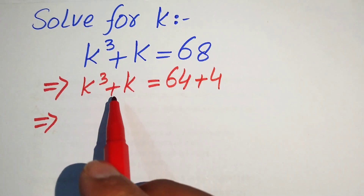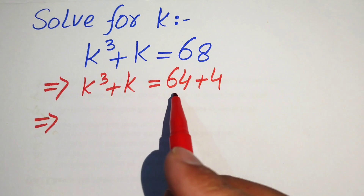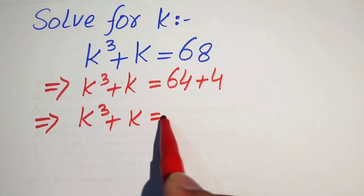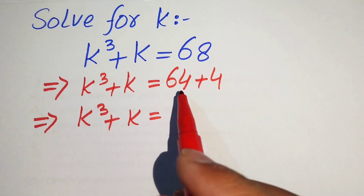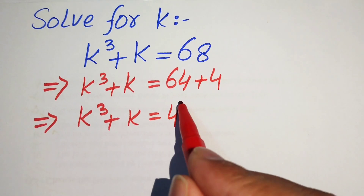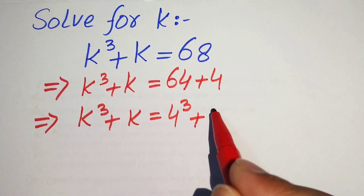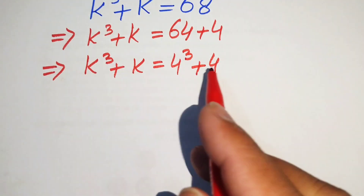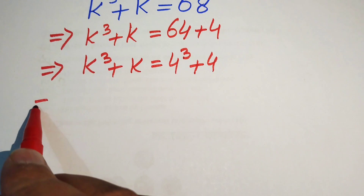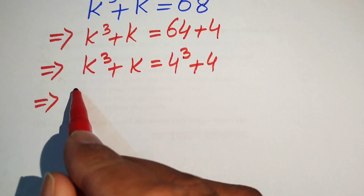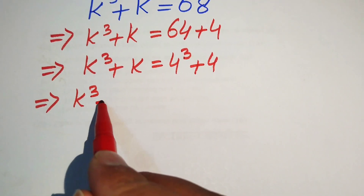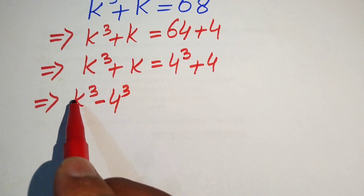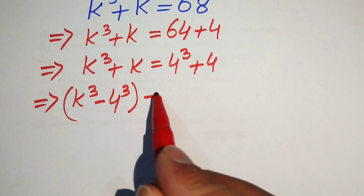We move terms to the left-hand side, but first we rewrite the right-hand side. We know 64 equals 4 cubed. So the equation becomes k cubed plus k equals 4 cubed plus 4. Moving both terms to the left, we pair cubic terms with cubic terms and the remaining terms together, giving us k cubed minus 4 cubed plus k minus 4 equals 0.